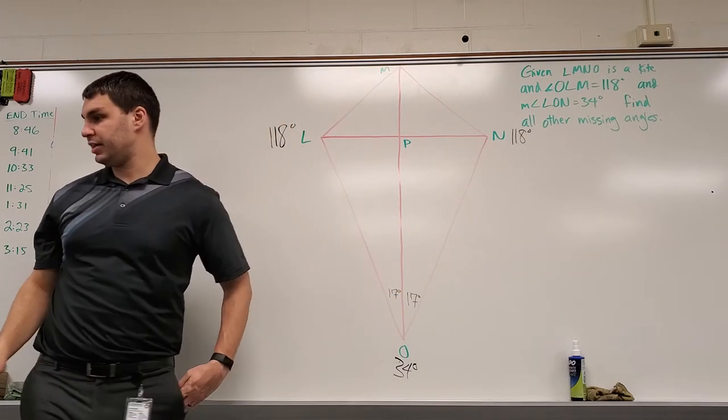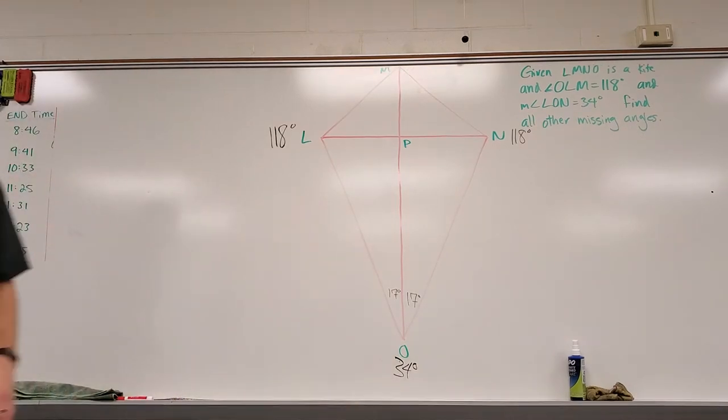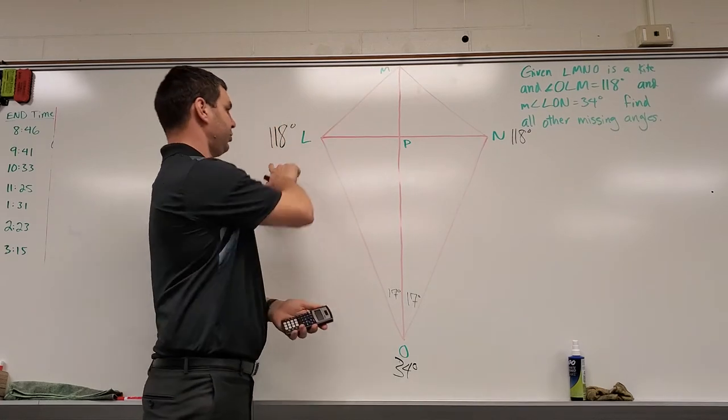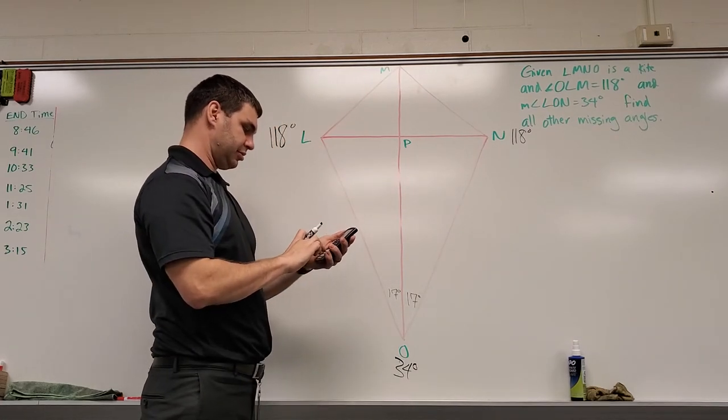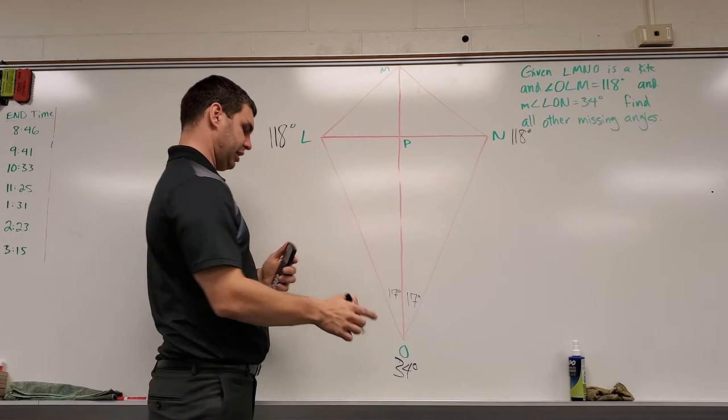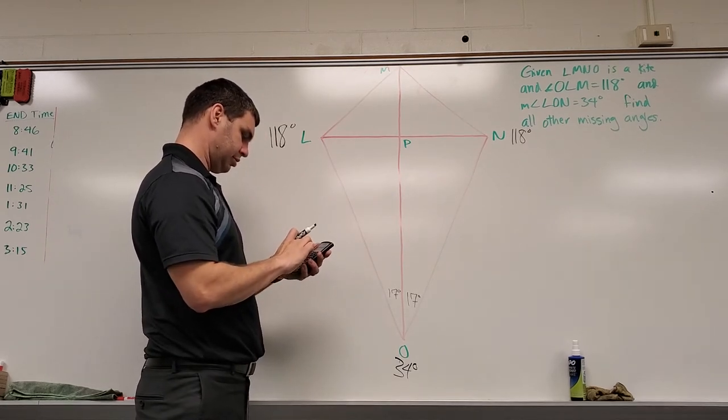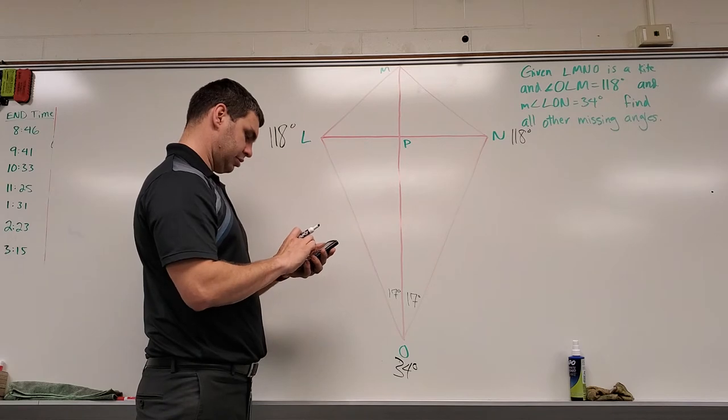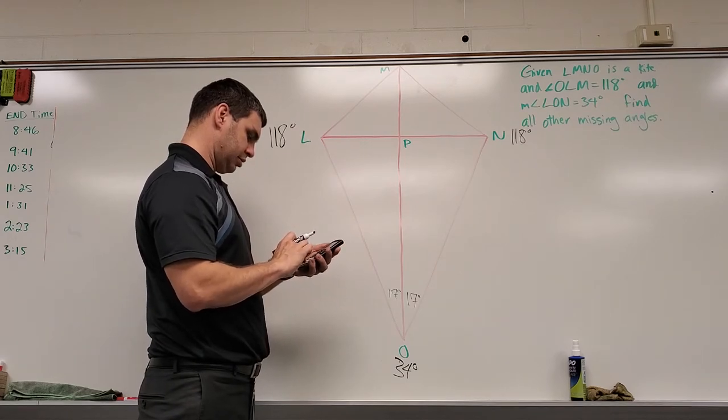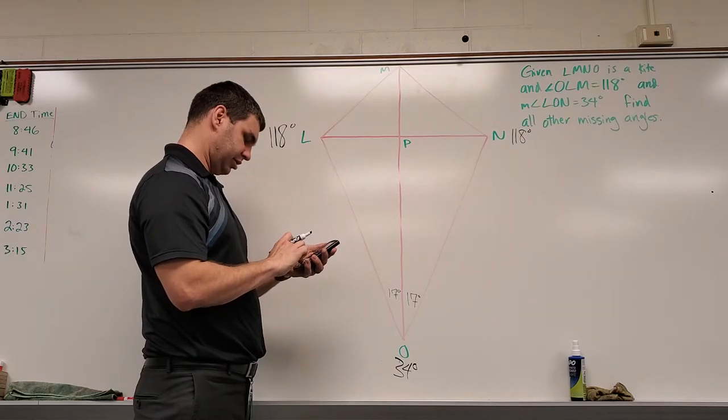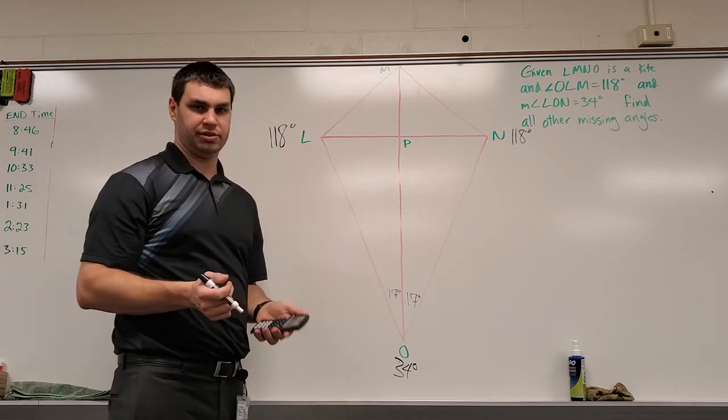And then if I grab a calculator here, we can find this last angle, this top one, by adding 118 times 2 plus 34. That gives us 270.